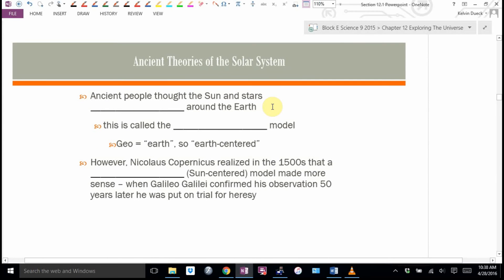So, ancient theories of the solar system. At one point, people thought the sun and the stars revolved around the earth. We used to think that the earth stood still and everything revolved around it. That the earth was the center of the universe. This was called the geo-centric model. Geo-earth-centric centered. We believed this for a long time. Well, it makes sense. It sure does look like the sun moves around us. It was a perfectly valid theory. It didn't match other observations.